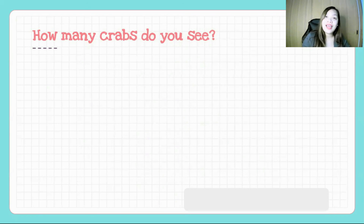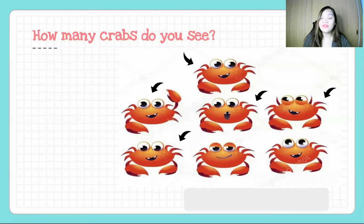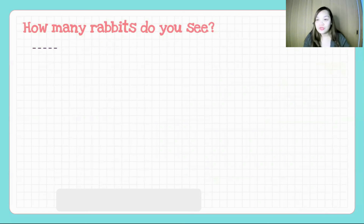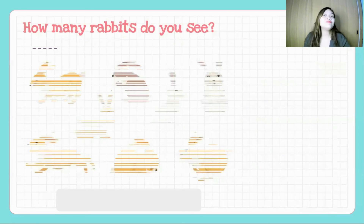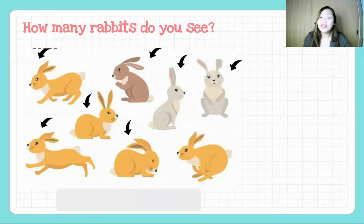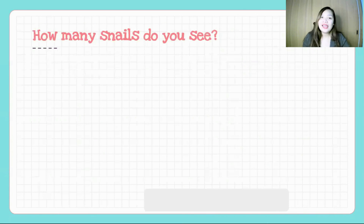How many crabs do you see? Let's count. One, two, three, four, five, six, seven. How many crabs do you see? I see seven crabs. Next — how many rabbits do you see? Let's try to count them. One, two, three, four, five, six, seven, eight. There are eight rabbits or I see eight rabbits.